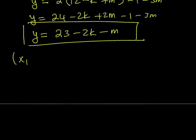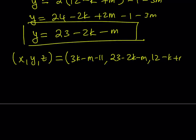And what happens here is we got the x and we got the y, and we already had the z in terms of everything. Let's put it all together. And I'm going to show you a couple examples what this means. So x, y, z as an ordered triple can basically be written as now, 3k minus m minus 11, comma, 23 minus 2k minus m, comma, 12 minus k plus m. That basically gives us all the solutions.